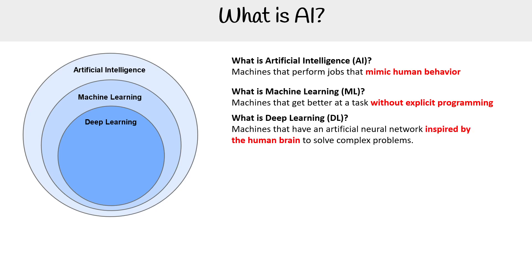Then we have what is deep learning. When we think of a lot of the AI stuff, we're usually thinking of deep learning, because it's these machines that have an artificial neural network inspired by the human brain to solve complex problems. You've probably seen a graphic of it — like these nodes that are interconnected and they go through layers. That's deep learning. A lot of people call that machine learning or AI, but no, that's DL.